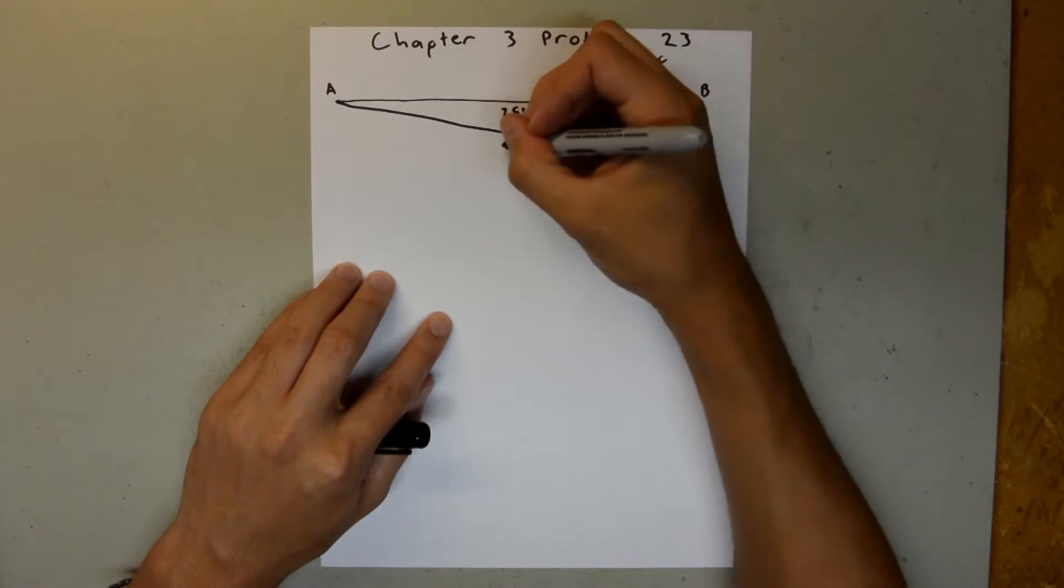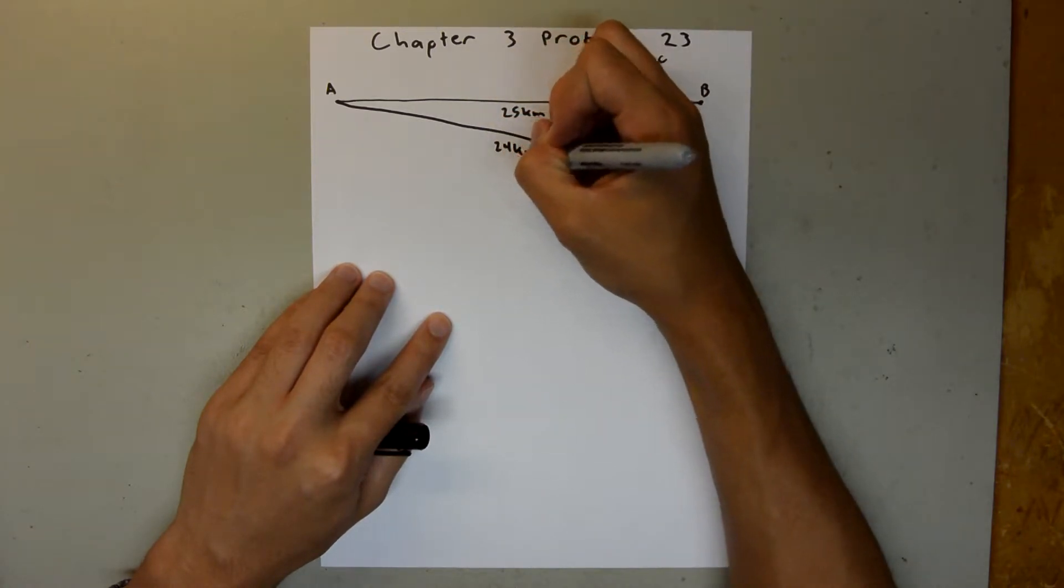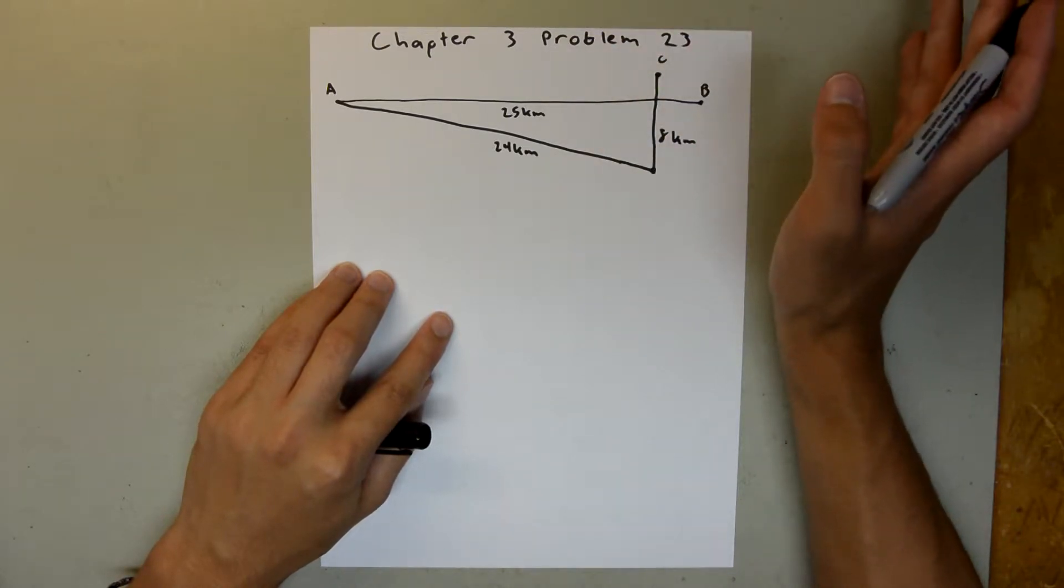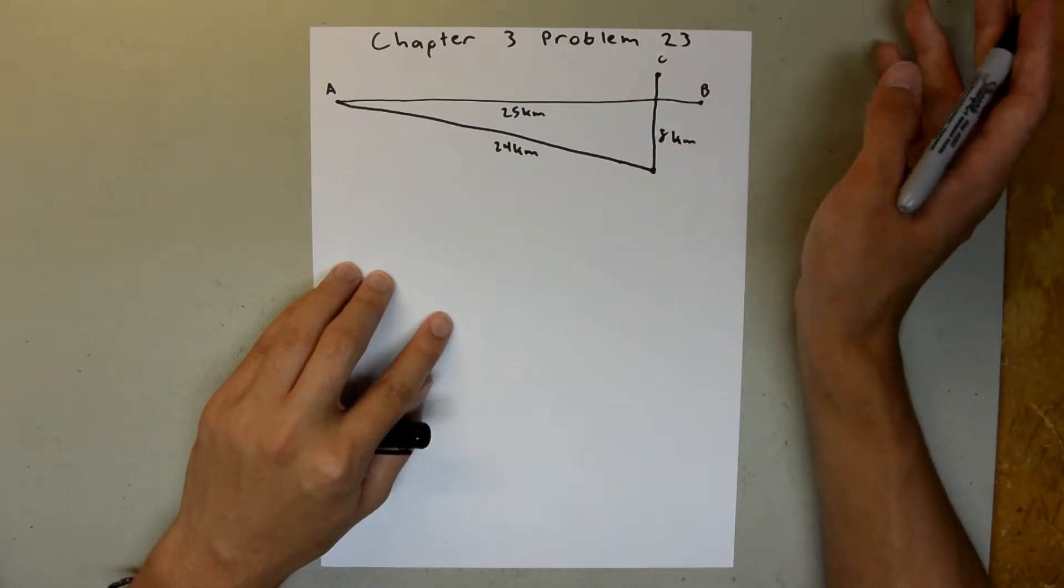So, this is 25, this right here is 24 kilometers, this is 8 kilometers. This may not be drawn completely to scale, I apologize, my art skills are not the best.